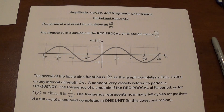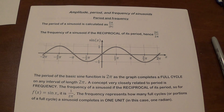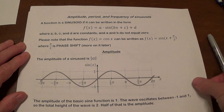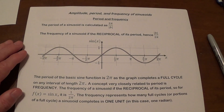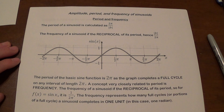The period is another thing. The period of a sinusoid is calculated as 2π divided by the absolute value of b, where b is the number in front of x. So whatever that number is, you divide 2π by its absolute value to get the period. The reason we use 2π is because the natural period for both sine and cosine is 2π.